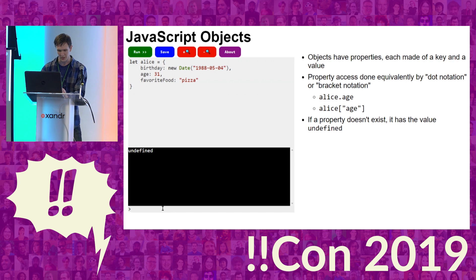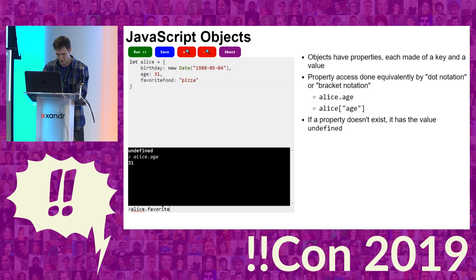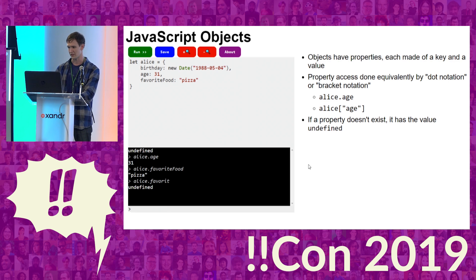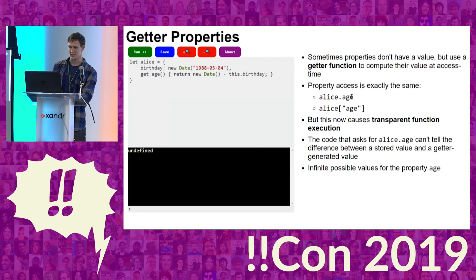So, objects. If you don't know objects, objects are a way to map a key onto a value. I have an object called Alice, and Alice has an age, a birthday, and a favorite food. If you ask for something that doesn't exist — if I mistype something — it's undefined. I can access properties using dot access and bracket access; they're the same.